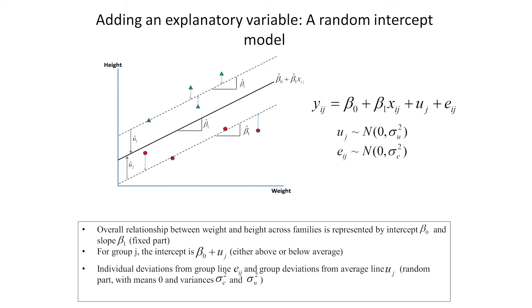And for each family, we assume the same increase in height for each unit increase in weight. The lines are parallel. But the point where the line crosses the y-axis is allowed to vary by the residual u_j.